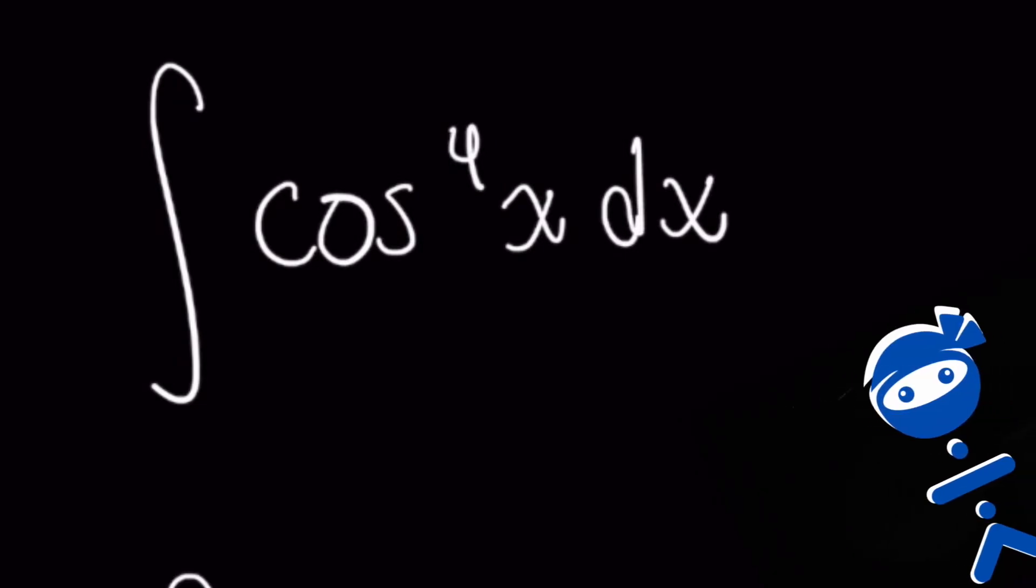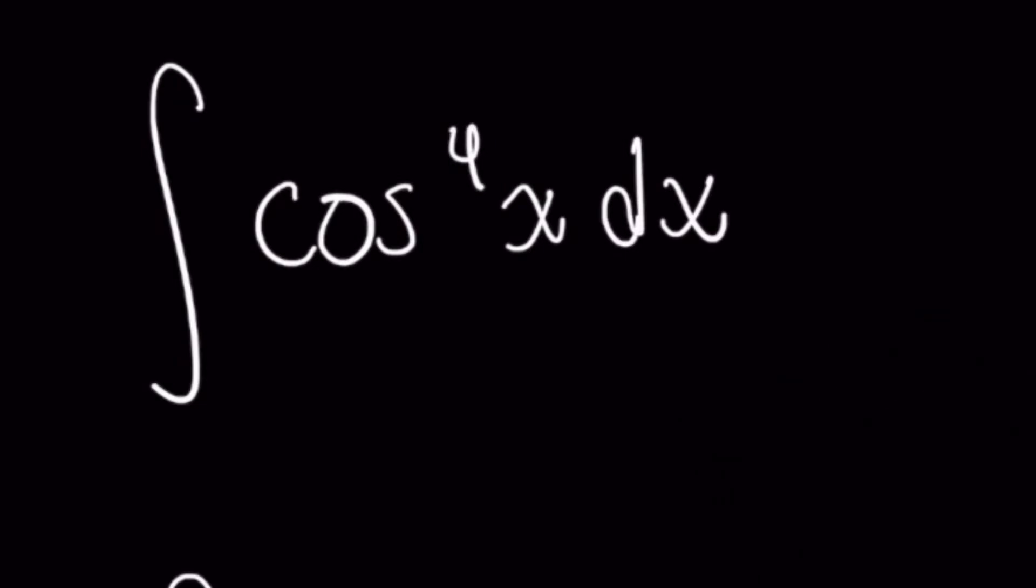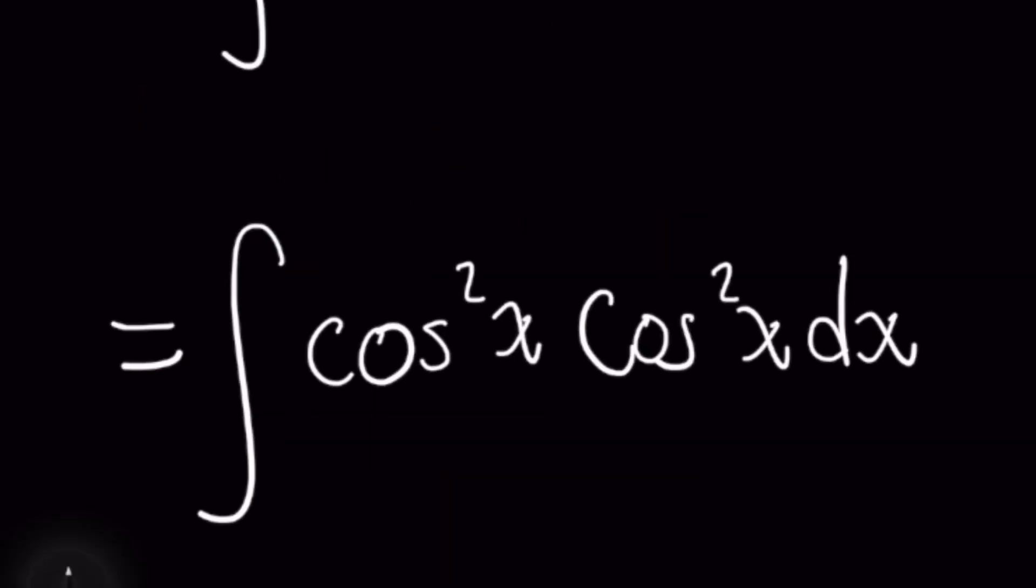We're about to make this difficult-looking integral a lot simpler than it looks. Remember that cosine to the fourth of x can be rewritten as cosine squared of x times cosine squared of x.